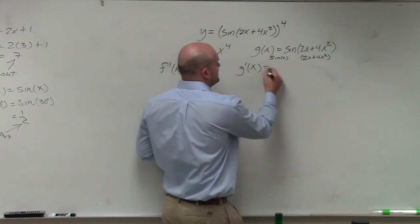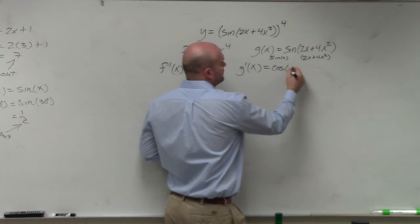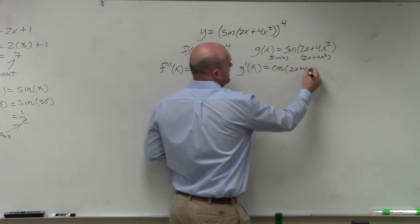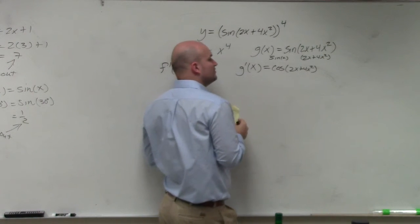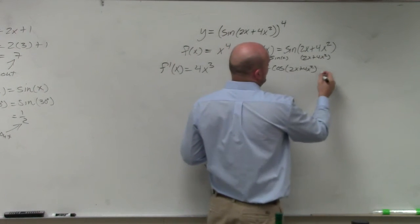So in this case, I have cosine of 2x plus 4x squared times the derivative of my inside function, which is going to be 8x plus 2.